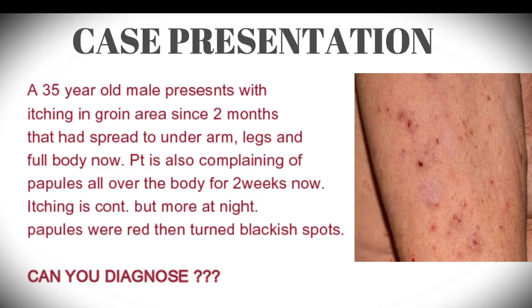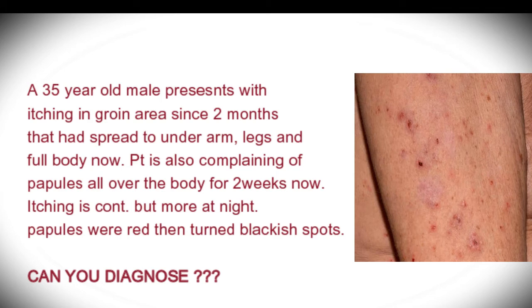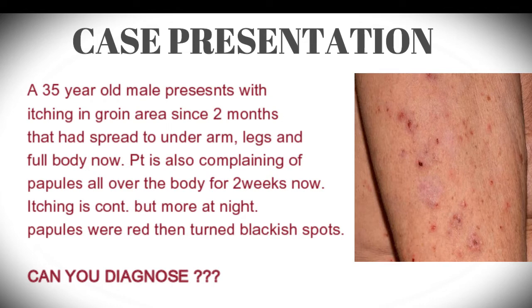Let's start with the case for today: a 35-year-old male presents with itching that started in the groin area and had spread to the underarm, legs, and eventually the full body within two months. The patient is also complaining of papules all over his body for two weeks now. The characteristic of the itching is that it is continuous but more at night or when the patient becomes warm, like when he wears a blanket.